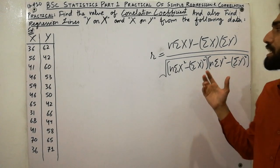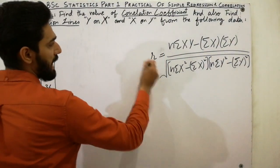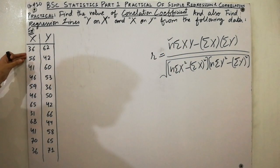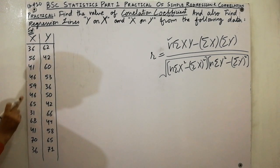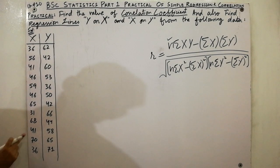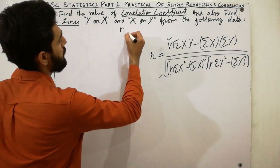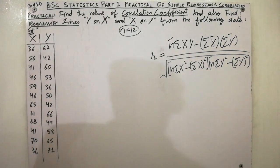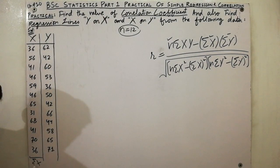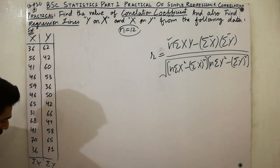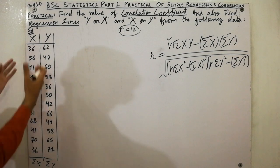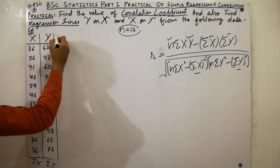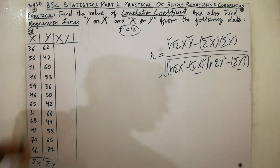That is the formula of the correlation coefficient, by which you can easily calculate r. First, you have to calculate n, the number of values: 1, 2, 3, 4, 5, 6, 7, 8, 9, 10 — so n equals 10. Next, calculate Σx and Σy by adding those column values. Then calculate the xy column by multiplying each pair.